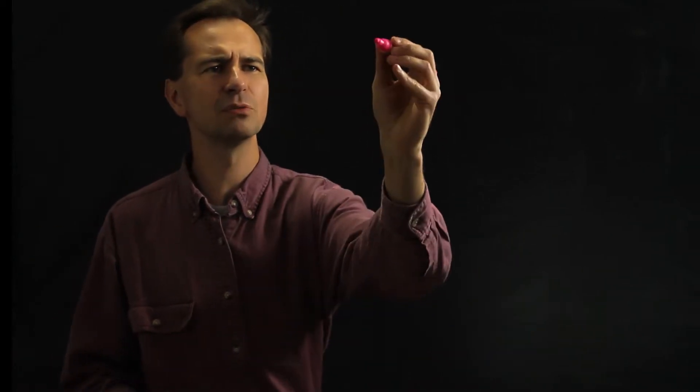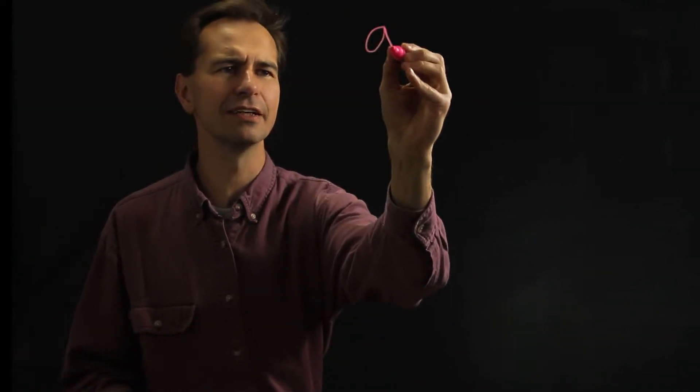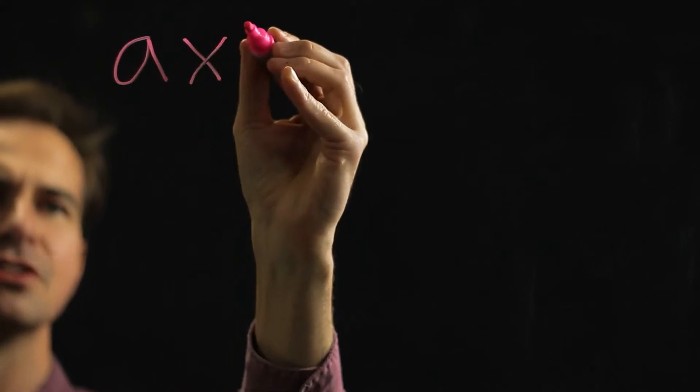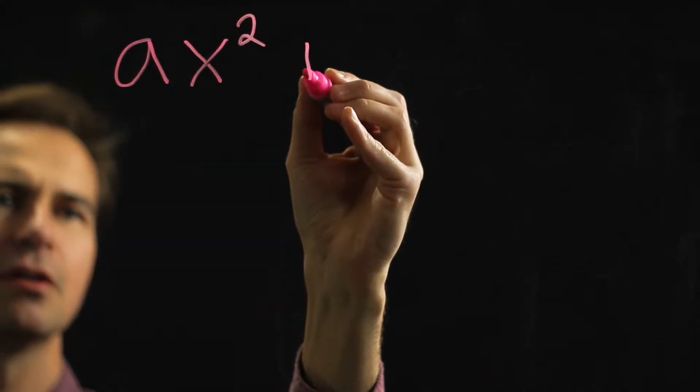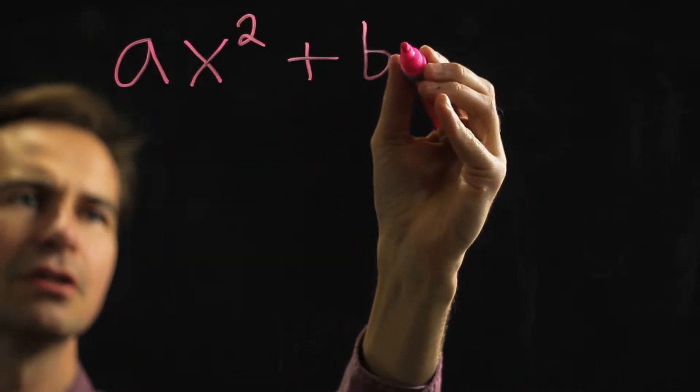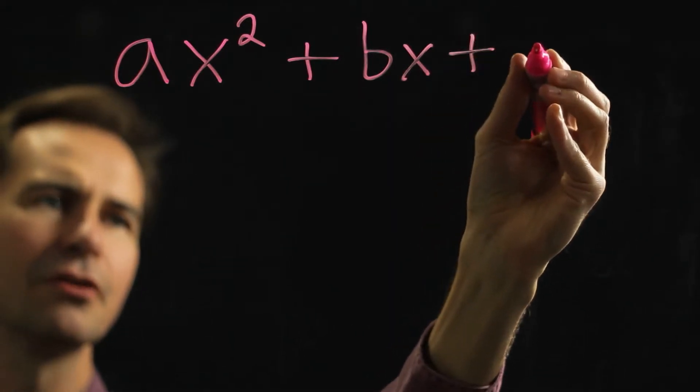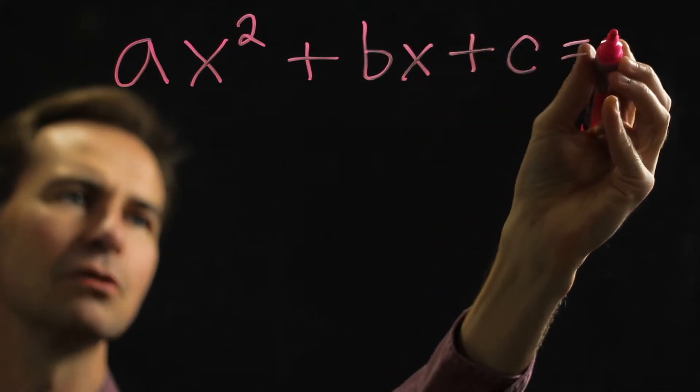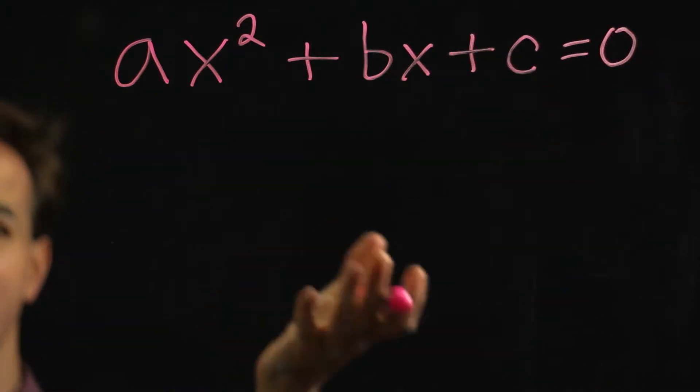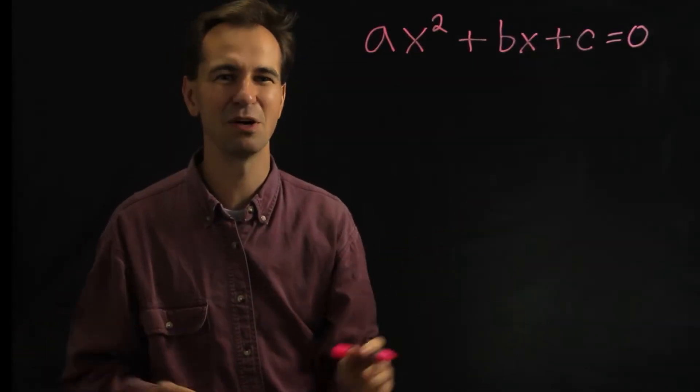Quadratic equation, for starters, what does that mean? Well, it's really anything that looks like this. A number times x squared plus another number times x plus another number, and all of that equals zero. So any equation that you can write in this form, that's a quadratic equation.